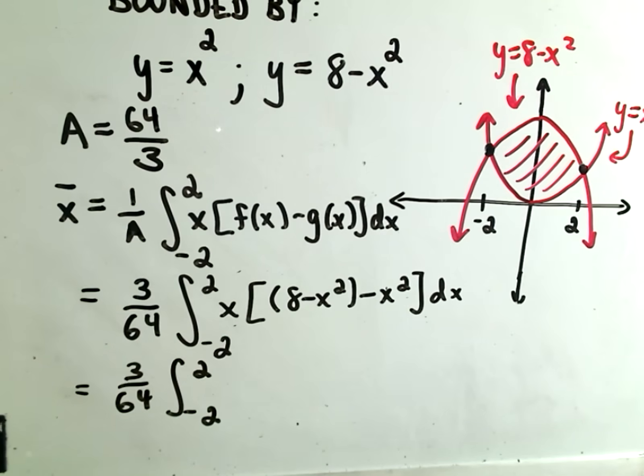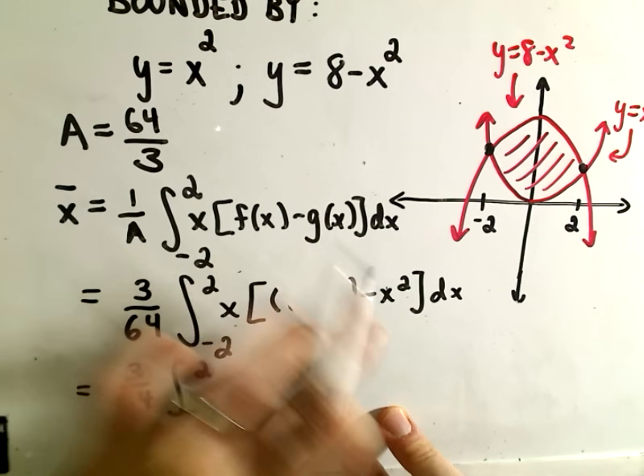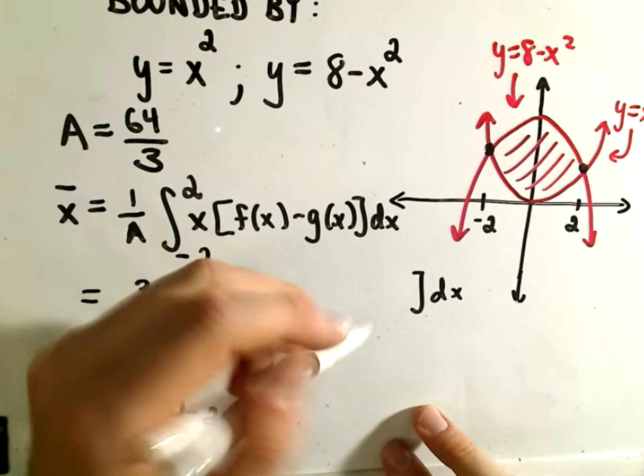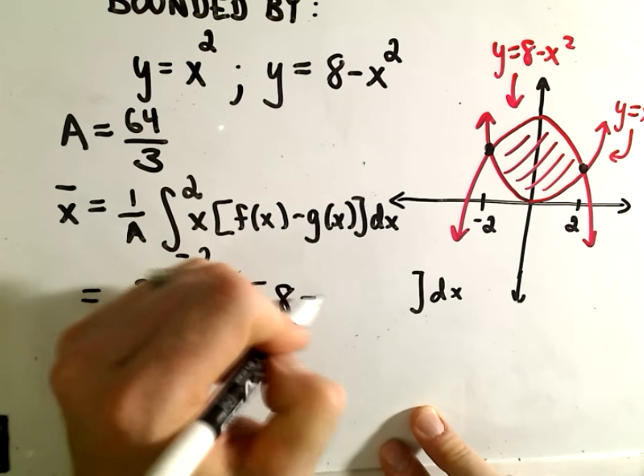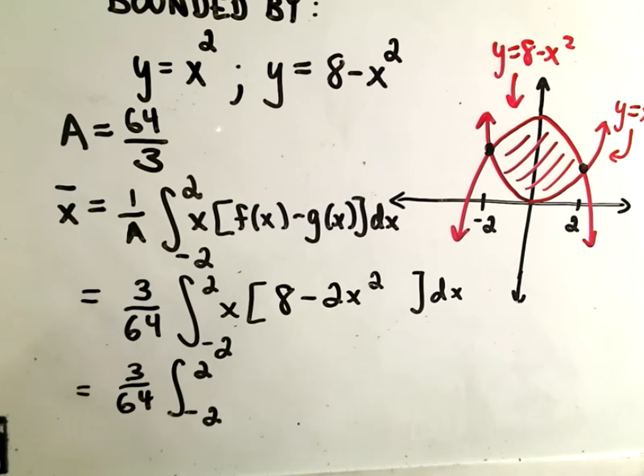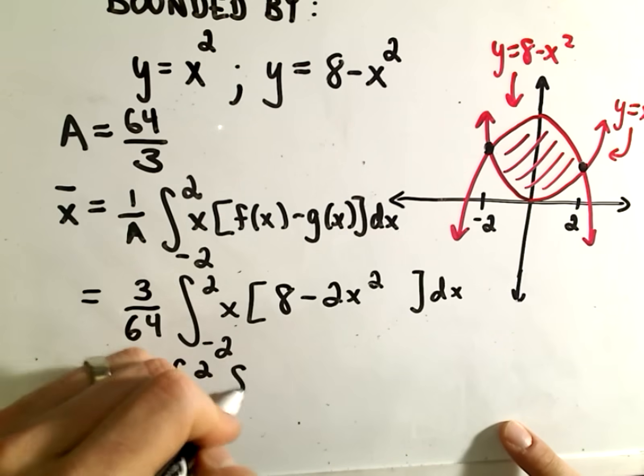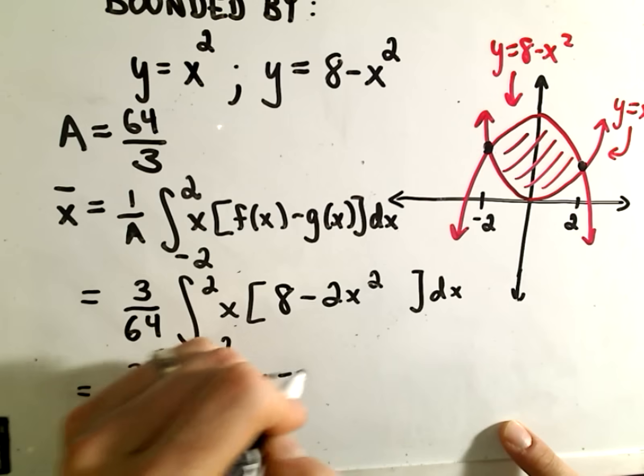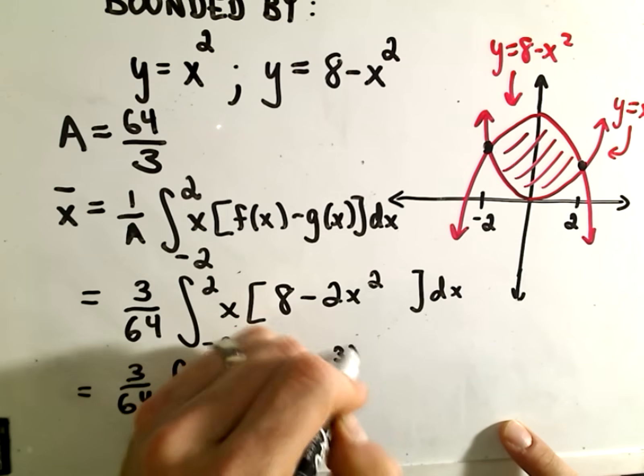On the inside, notice 8 - x² - x² would simply give us 8 - 2x². When I distribute my x to that, we'll get 8x - 2x³ dx.